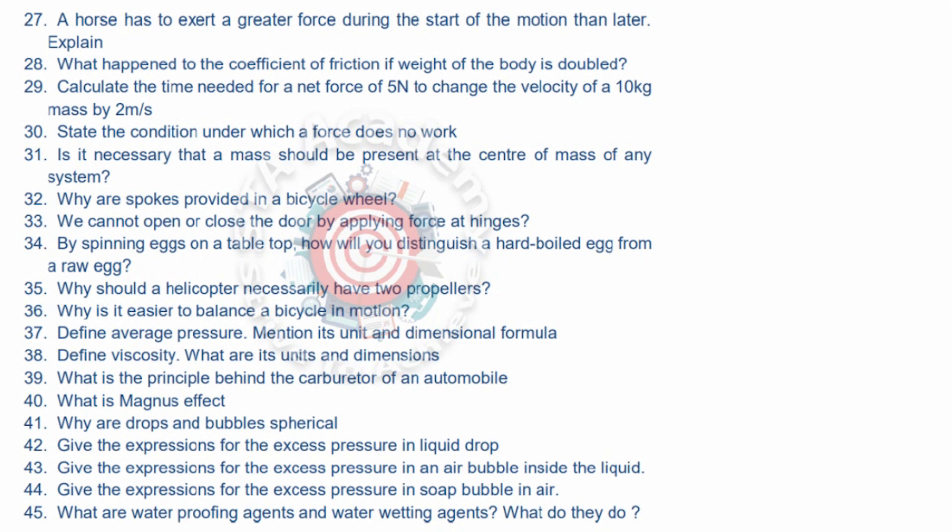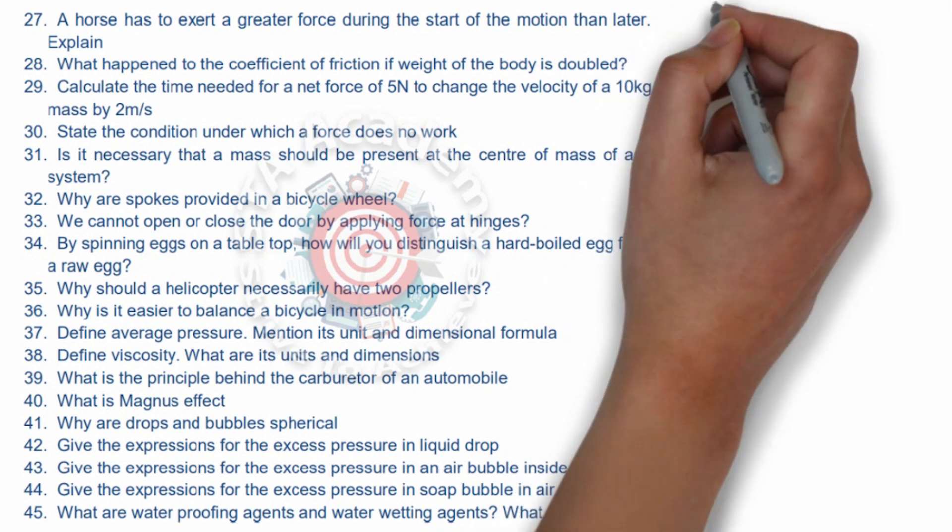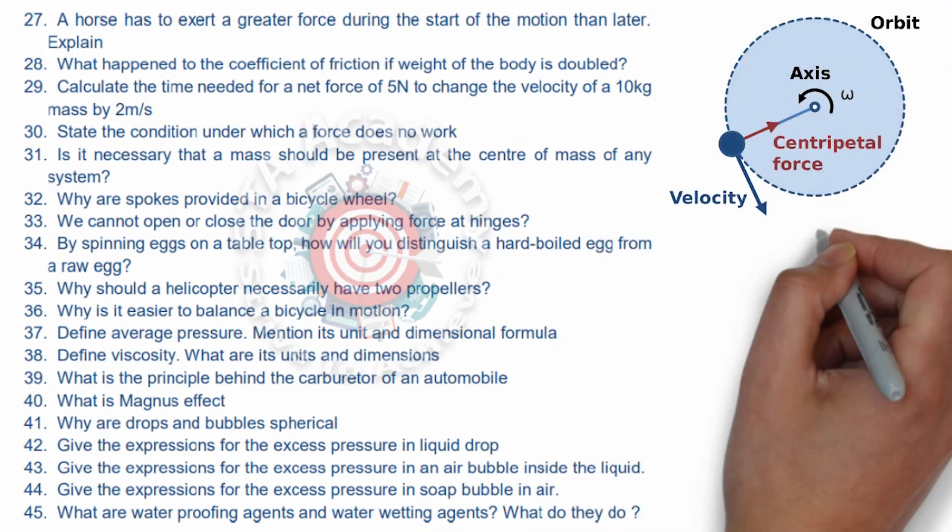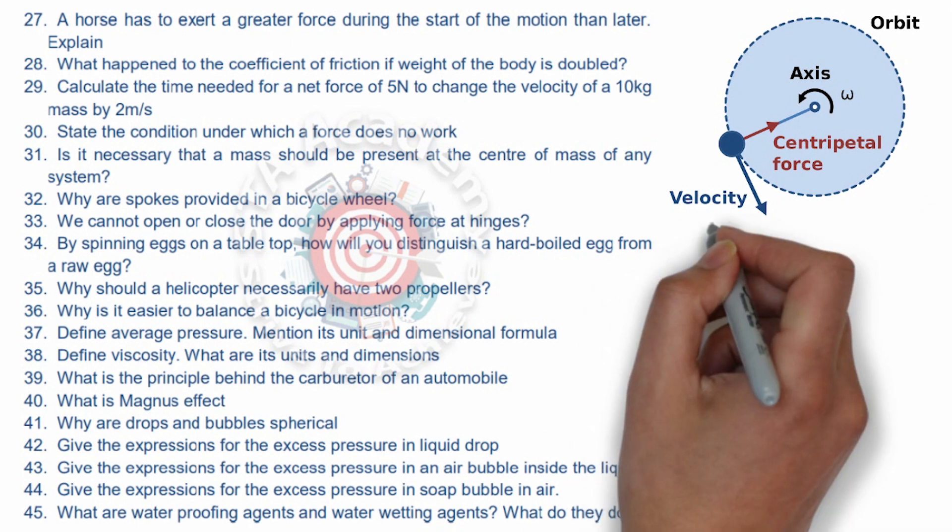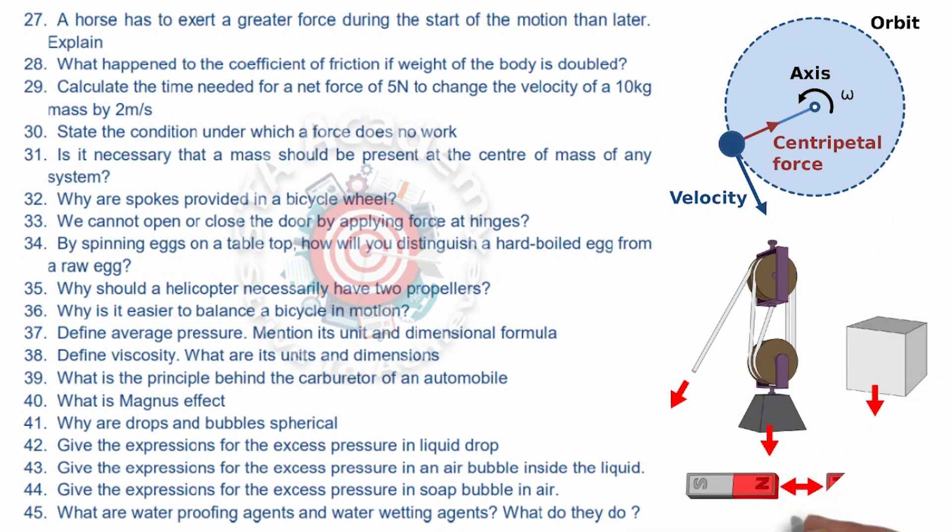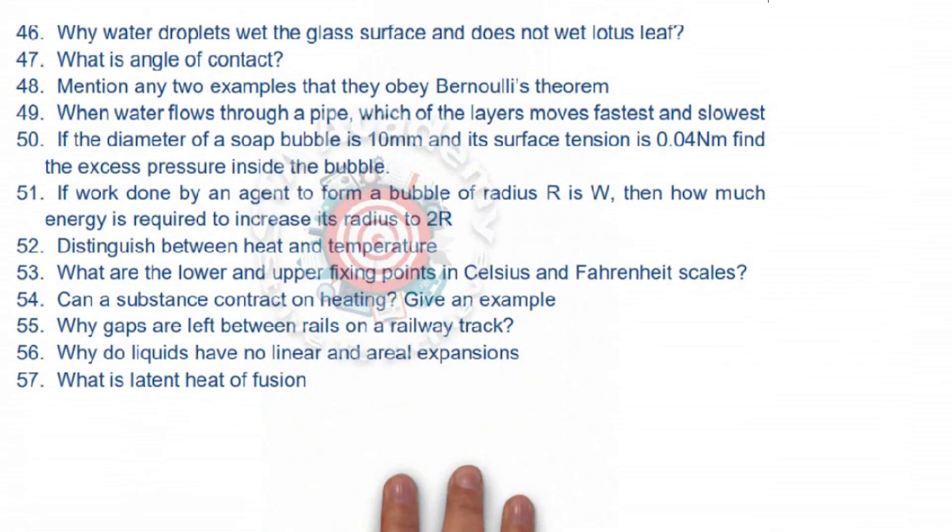Thirty is also very important question. Thirty-first: is it necessary that mass should be present at the center of mass of any system? Thirty-second is why are spokes provided in a bicycle wheel? Thirty-three: we cannot open or close the door by applying force at hinges. Thirty-four: by spinning eggs on a tabletop, how will you distinguish a hard boiled egg from a raw egg? Thirty-fifth: why should a helicopter necessarily have two propellers? Thirty-six: why is it easier to balance a bicycle in motion? Thirty-seven: average pressure. Thirty-eight: viscosity. Thirty-nine is what is the principle behind carburetor of an automobile? Forty is Magnus effect. Forty-one is why are drops and bubbles spherical? Next is forty-two: give the expression for the excess pressure in liquid drop. Forty-three: pressure in air bubble inside the liquid. Forty-fourth, forty-fifth, forty-sixth these are very important numericals up to fifty-seven.